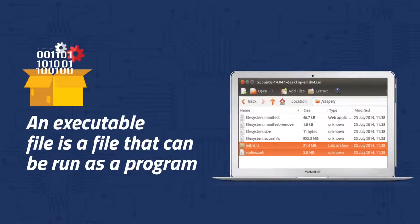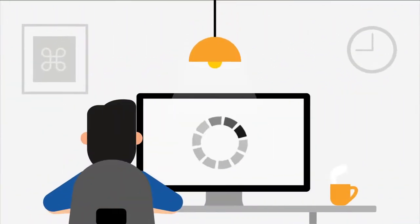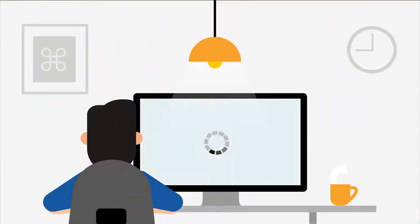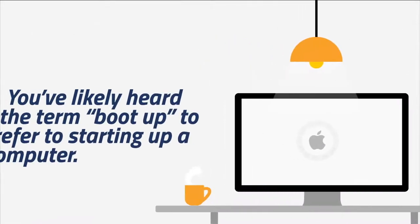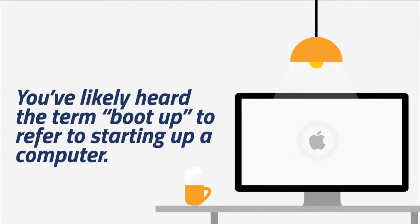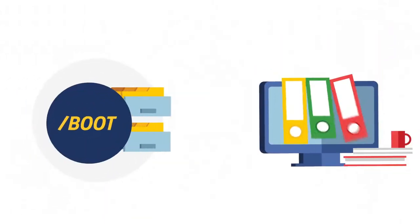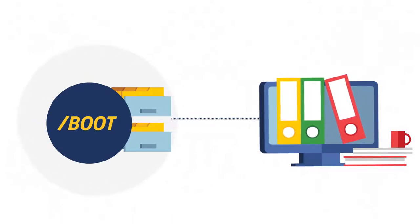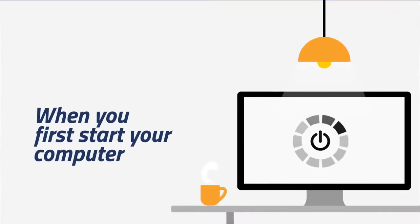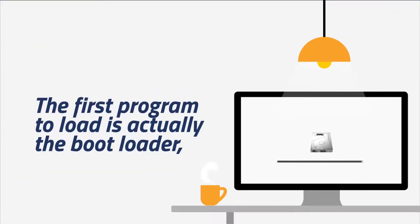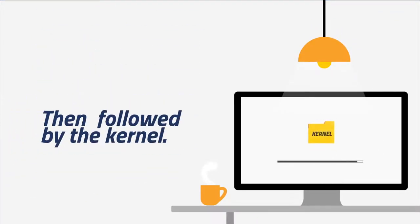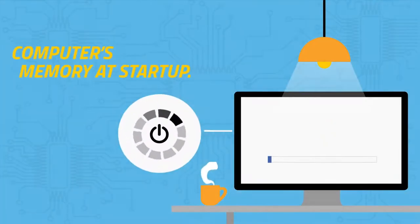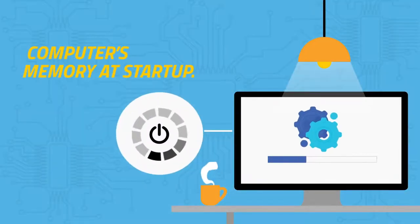It's in the form of an executable image called vmlinuz. You've likely heard the term boot up to refer to starting a computer — that's because the boot directory contains all the files needed to begin an operating system, including the bootloader files. When you first start your computer, the first program to load is the bootloader, followed by the kernel. Every operating system includes a bootloader that loads the rest of the OS into the computer's memory at startup.